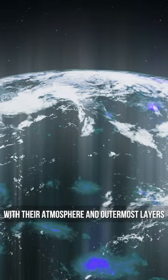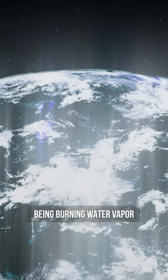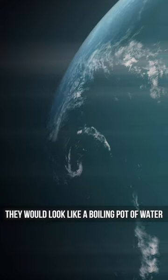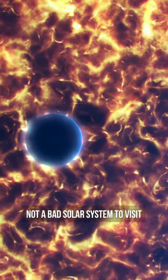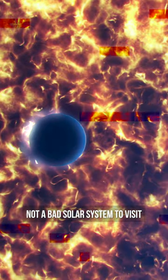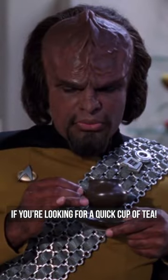With their atmosphere and outermost layers being burning water vapor due to the scorching temperatures, they would look like a boiling pot of water orbiting their sun if we could see them. Not a bad solar system to visit if you're looking for a quick cup of tea.